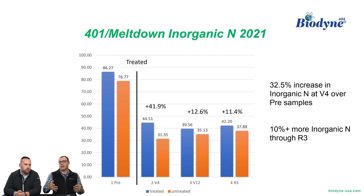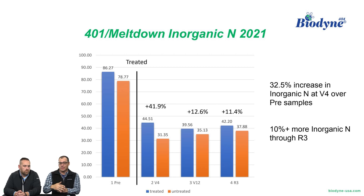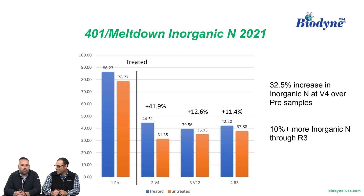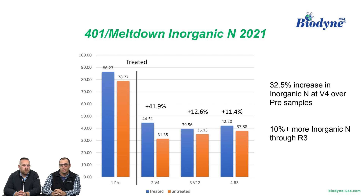When we said we've got 42% more at V4, what that really means is about a 32.5% increase in inorganic nitrogen at V4 over the pre-sample. We had an advantage already at the beginning, and even accounting for that, we were still 30% more inorganic nitrogen at V4. As soon as that biology goes in the soil, it goes to work. By the time we get to R3, we still have 10% more inorganic nitrogen. And this doesn't take into account what the plant is taking up — the plants suck that nitrogen out of the ground throughout the entire season while the biology keeps converting and making more available.